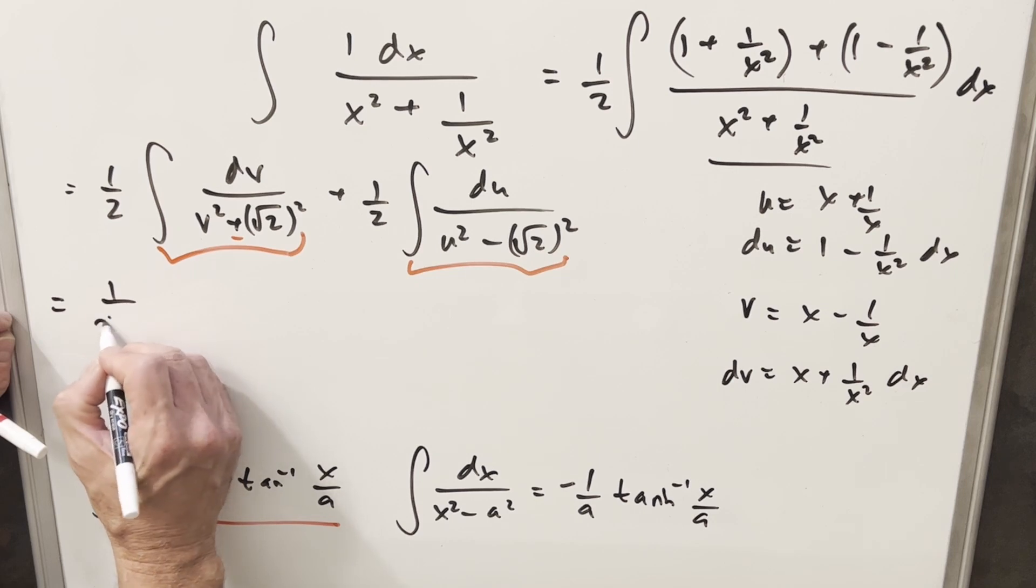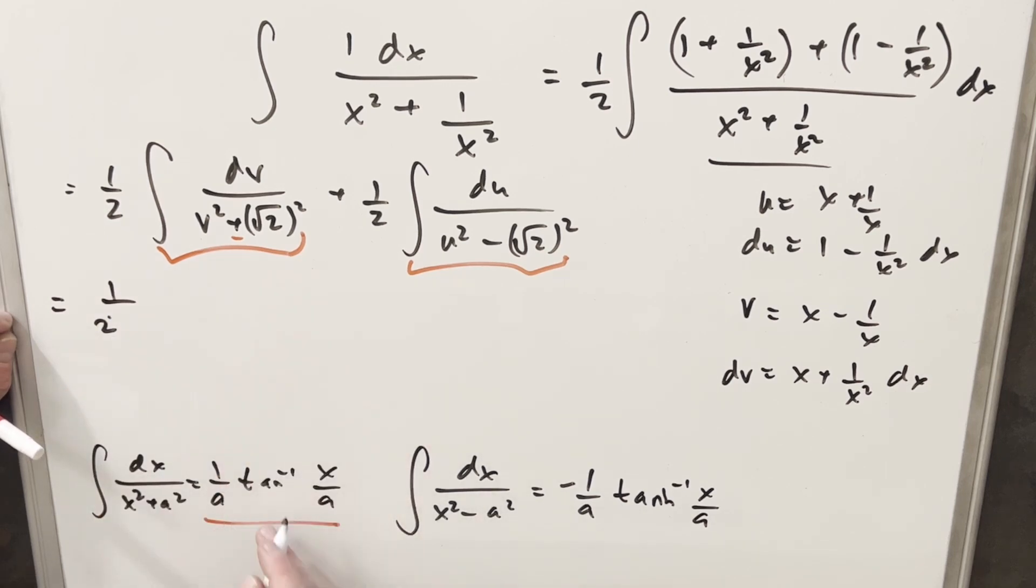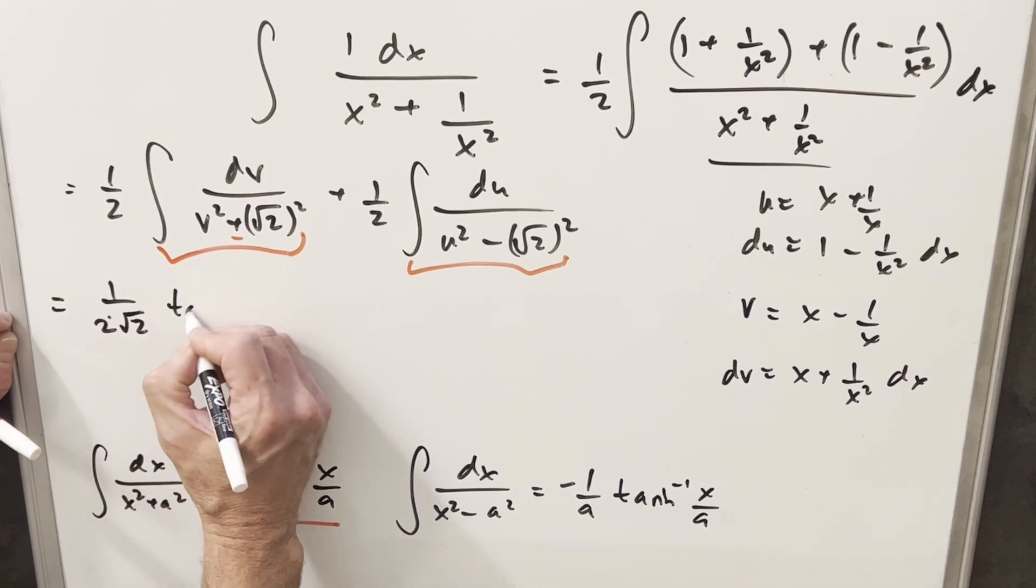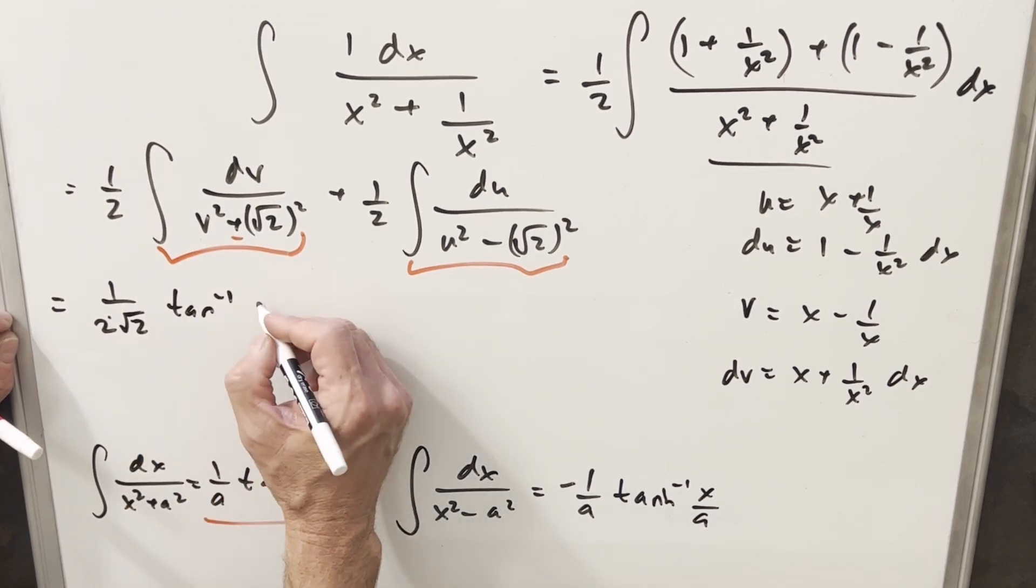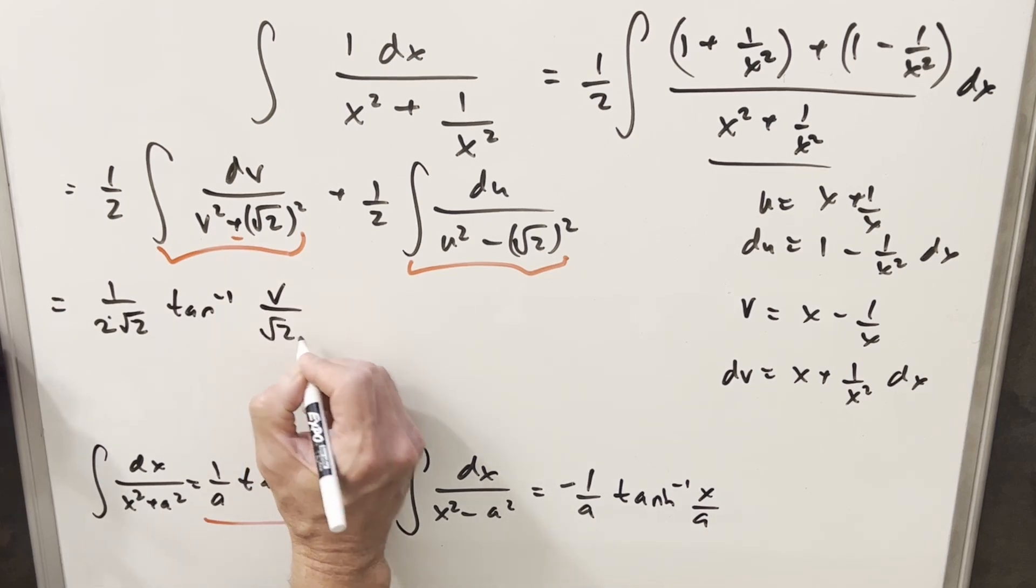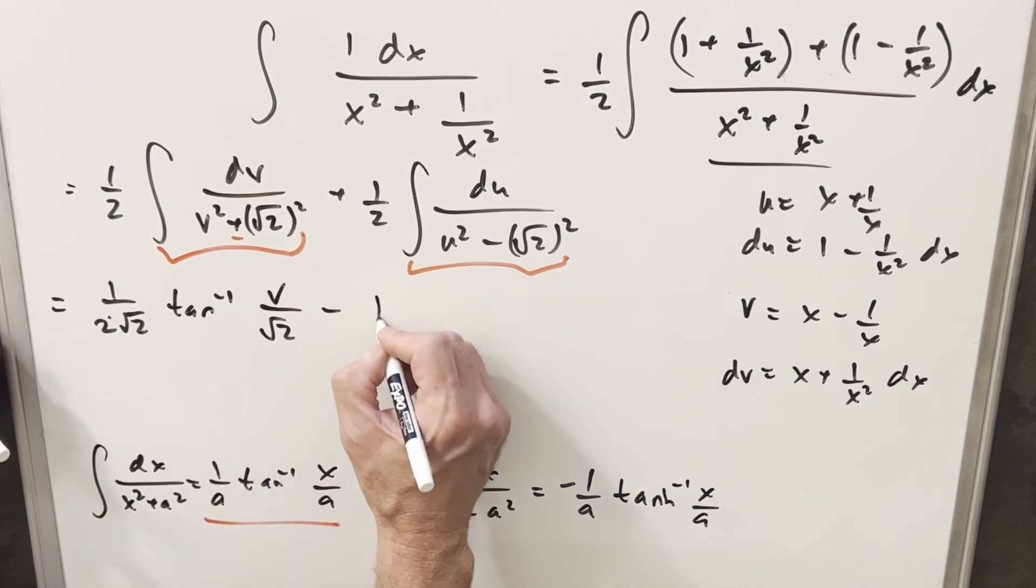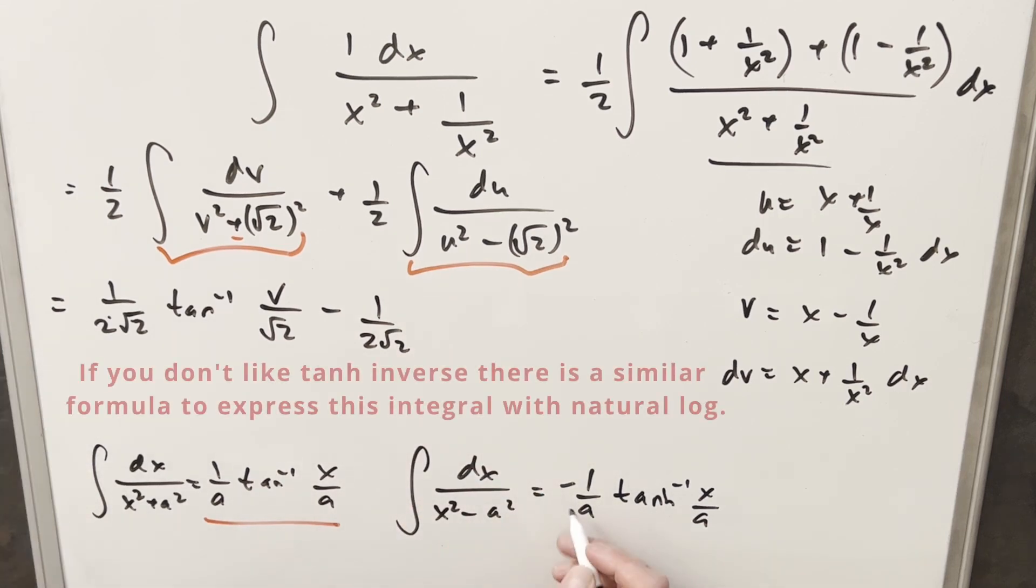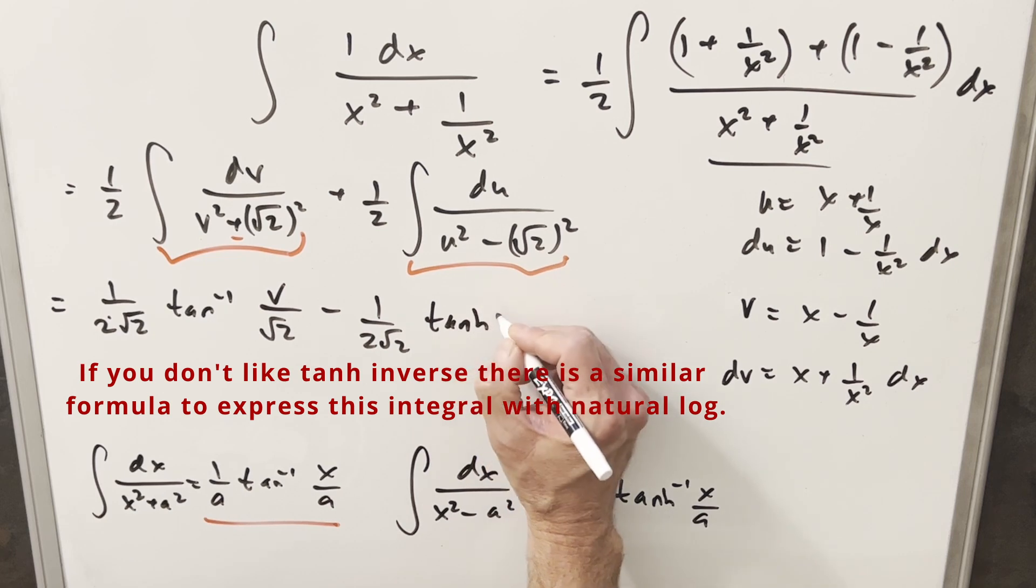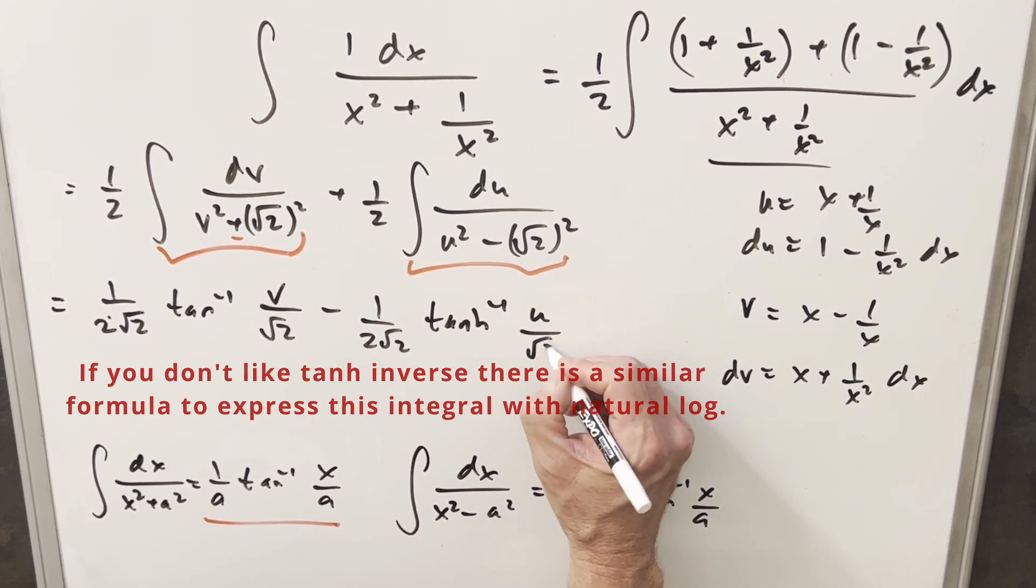So I'm going to write, we'll have our 1 half out front, and then I'm going to bring out the, so then for our a value here, it's going to be square root of 2. We'll have our inverse tangent. Instead of x, we're going to have v over square root of 2. And then here, it's going to be minus 1 over 2 square root of 2. The minus sign coming from right there. And then we're going to have our hyperbolic inverse tangent. And this is going to be u over square root of 2.